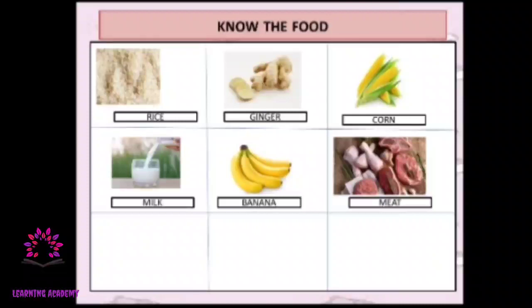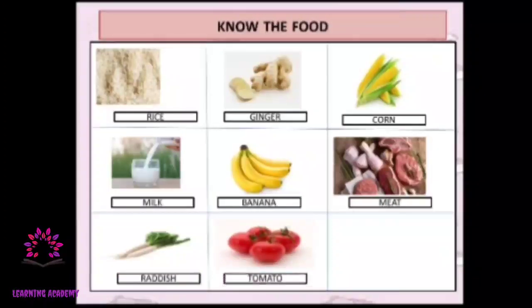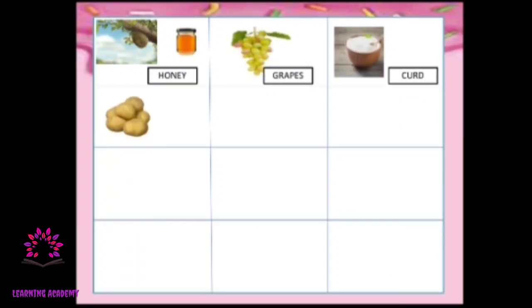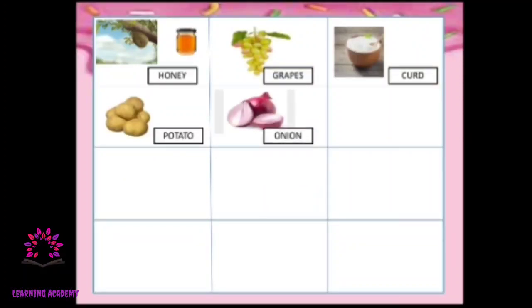What is this? This is a favorite food of rabbits — do you know this food? This is called radish. This is tomato. This is fish. Let's learn some more food items. What is this? This is honey. This is grapes. This is curd. This is potato. This is onion — for your curry you need to use onions. This is carrot, which is good for your eyes.